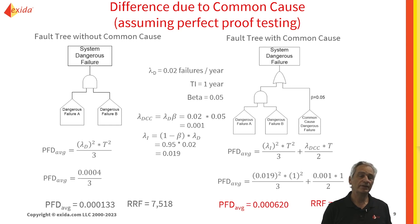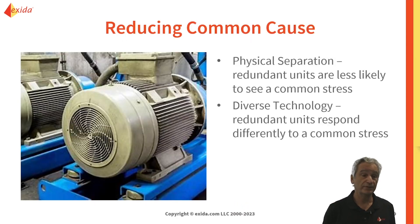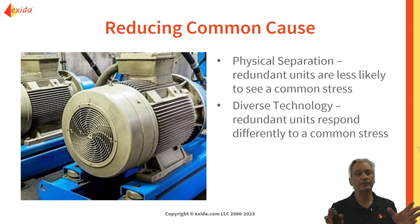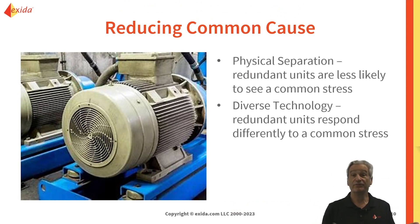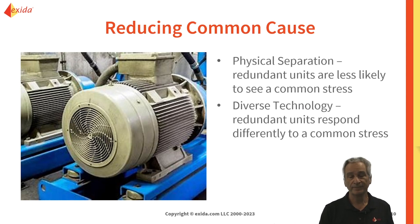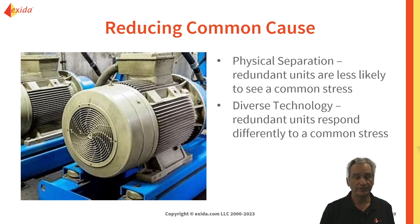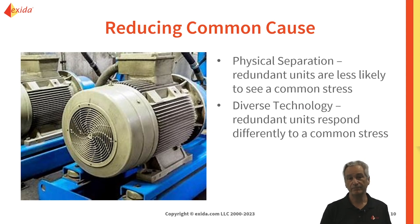What can we do in terms of some protection against common cause? Well, we can use physical separation. We can put redundant units into different cabinets and even different areas, and we can run the cabling in independent, different conduits. So they won't see as much of the common cause potential, and therefore that will help with reducing the impact.